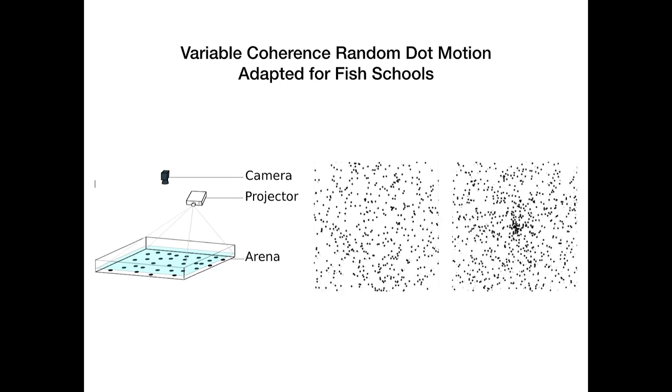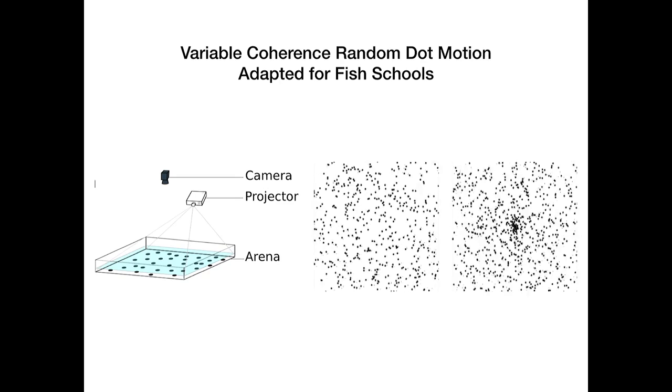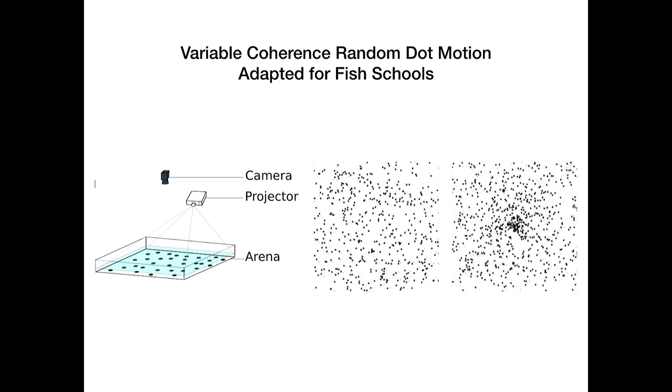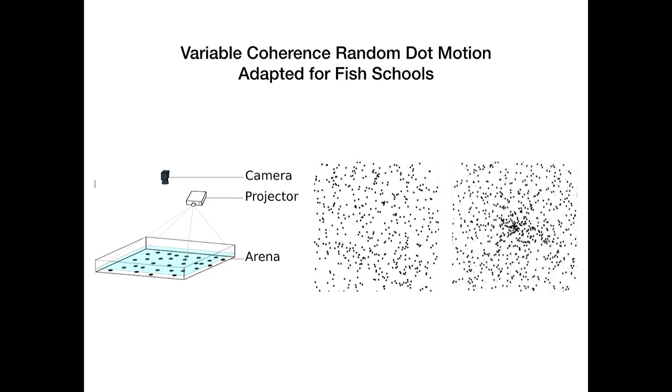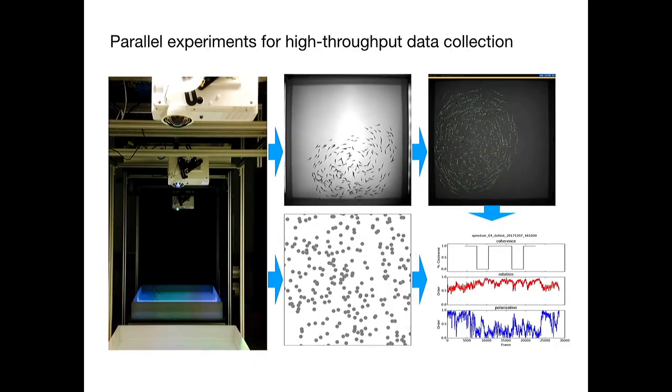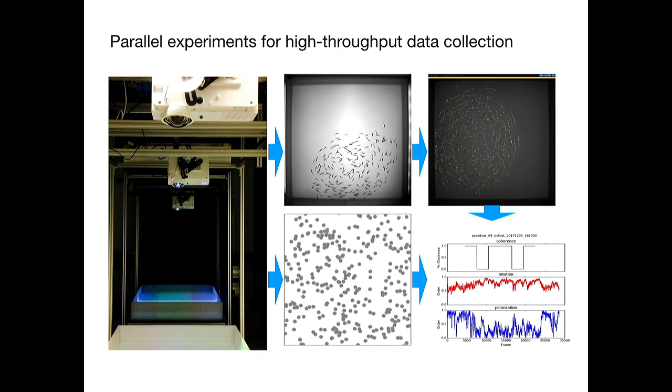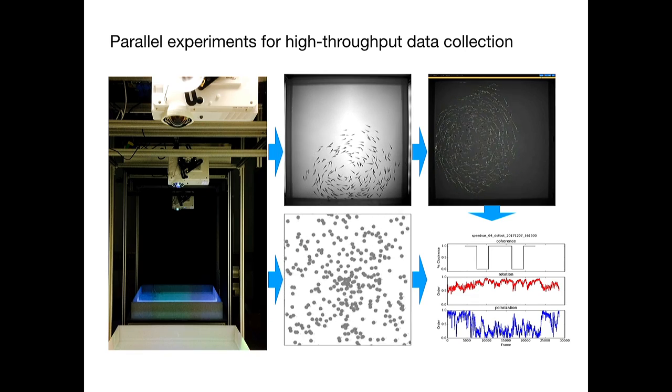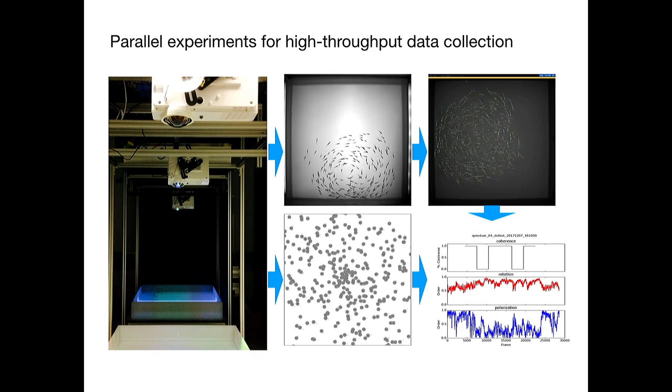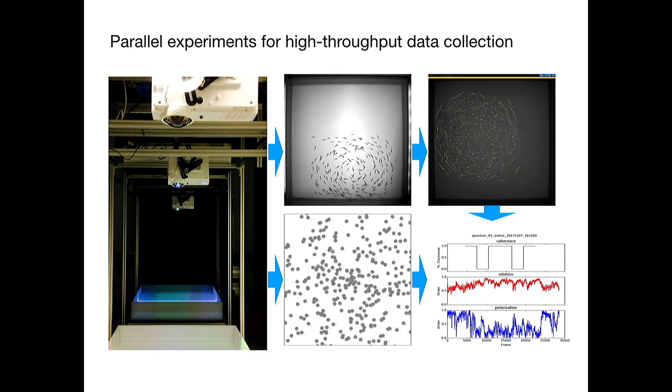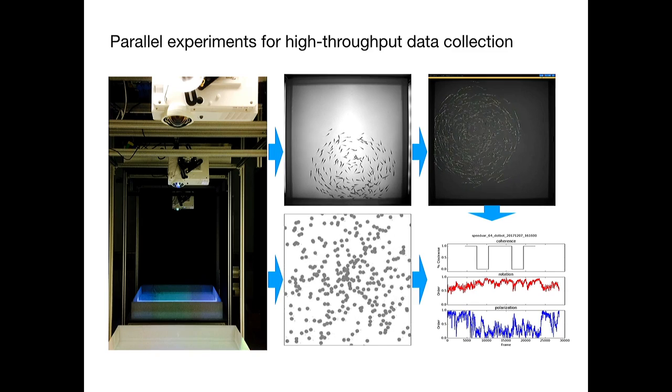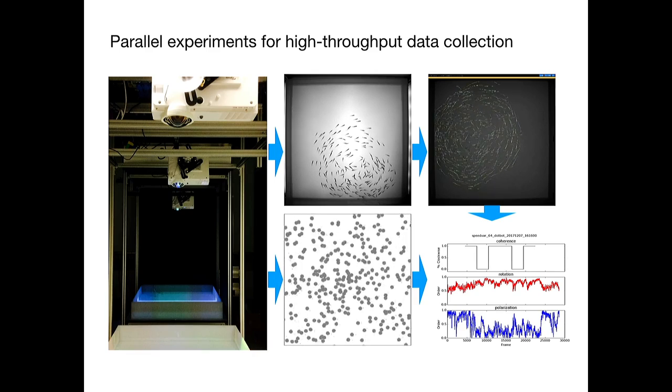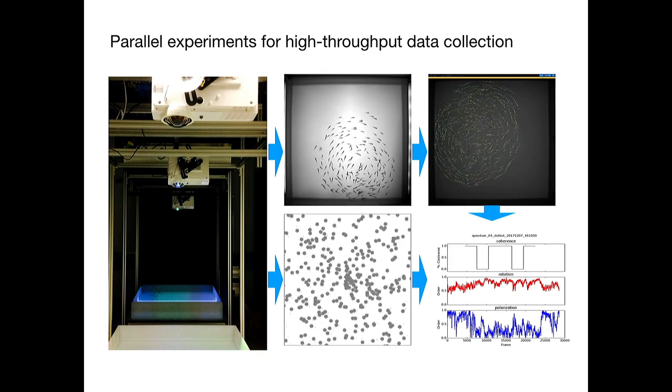So this lays the framework for the adaptation of the random dot motion task to fish schools. We simply project patterns onto the floor of the tank, record them with camera, and we can present a school with a very easy decision to make or a relatively difficult one. Because there's so many parameters in the system, we developed a high throughput system to parallelize the data collection. We have seven identical tanks set up with projectors and cameras and so on. And we've developed a data analysis pipeline that gives us trajectory data synchronized with stimulus information so that we can associate the response of the collectives to the presentation of the stimulus.